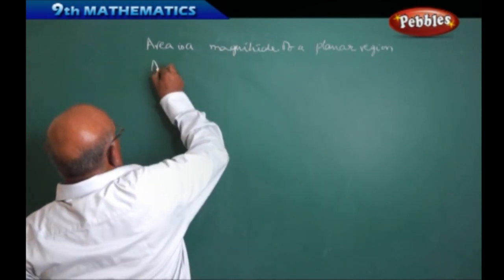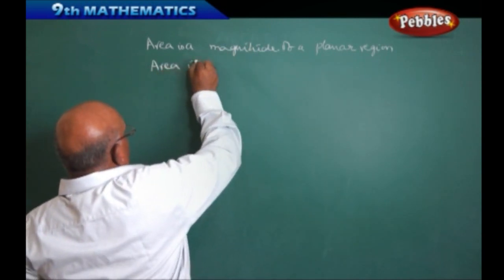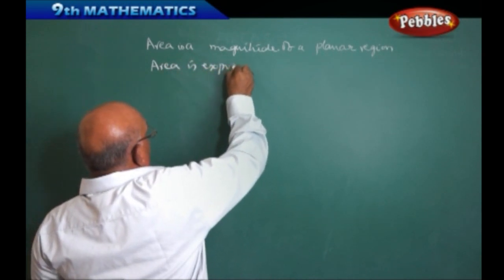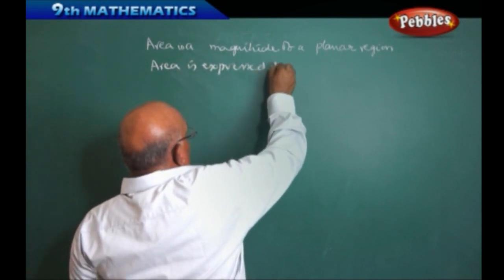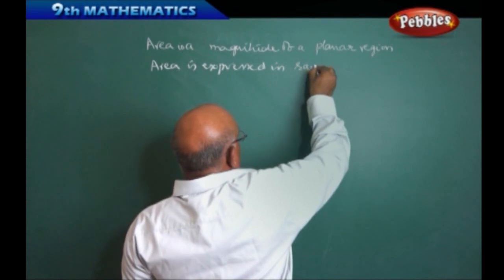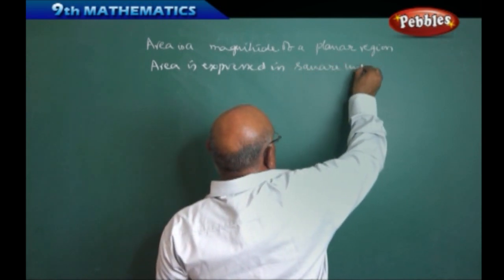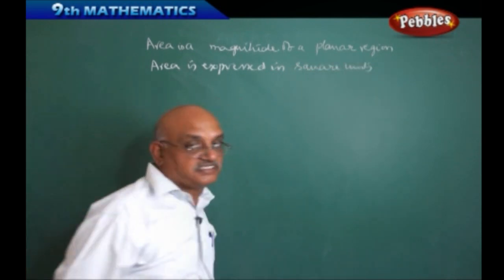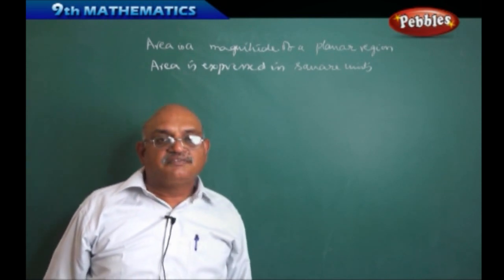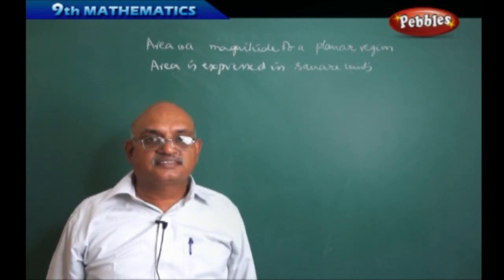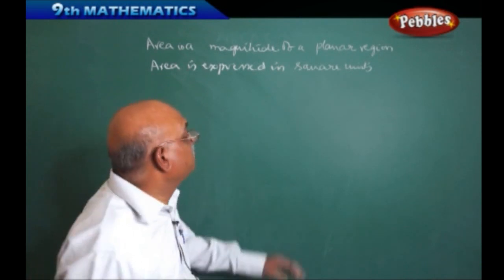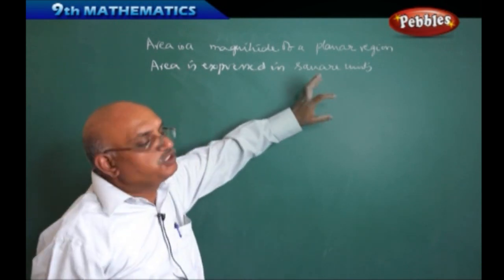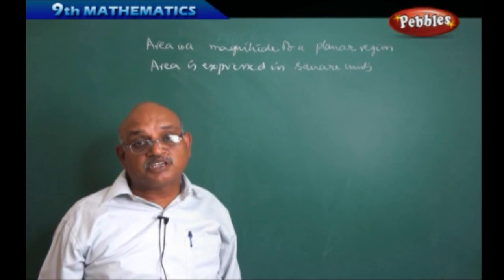Area should be expressed in terms of, area is expressed in square units. Every time, because when we are dealing with two sides or three sides or any number of sides, naturally the volume can be discussed with respect to the cubic units.